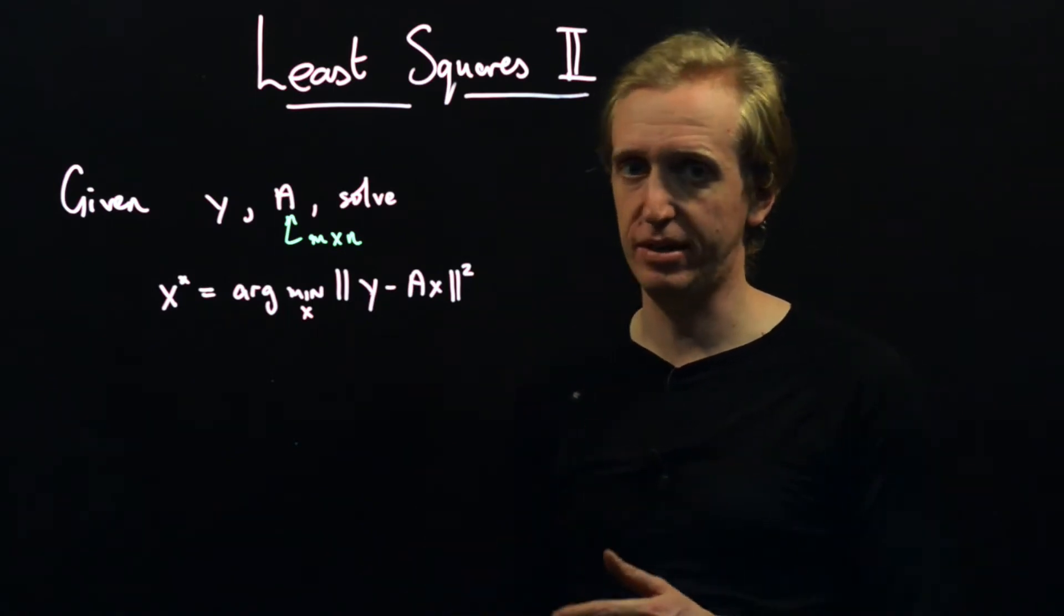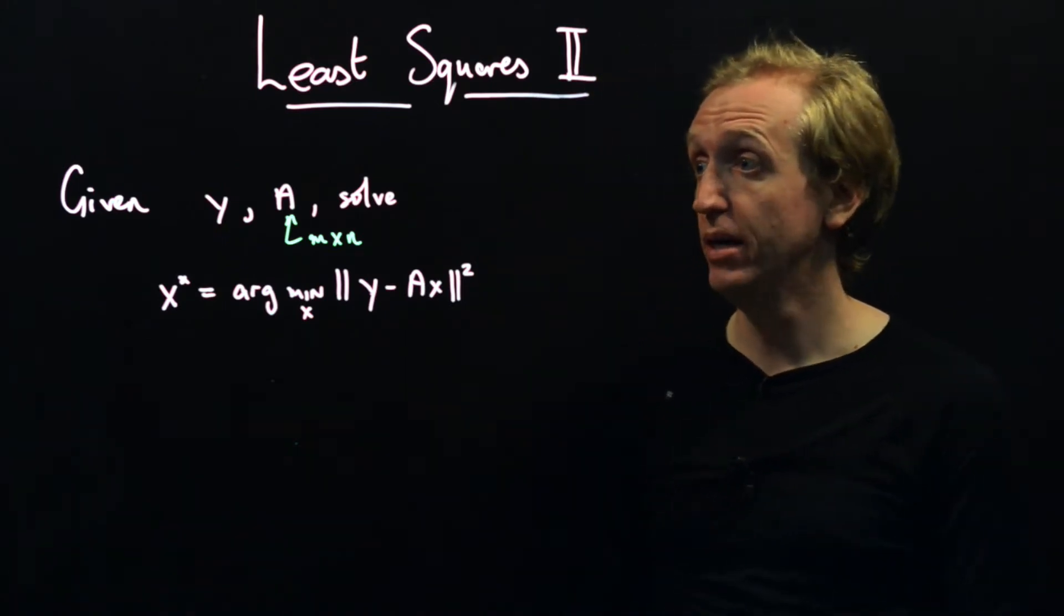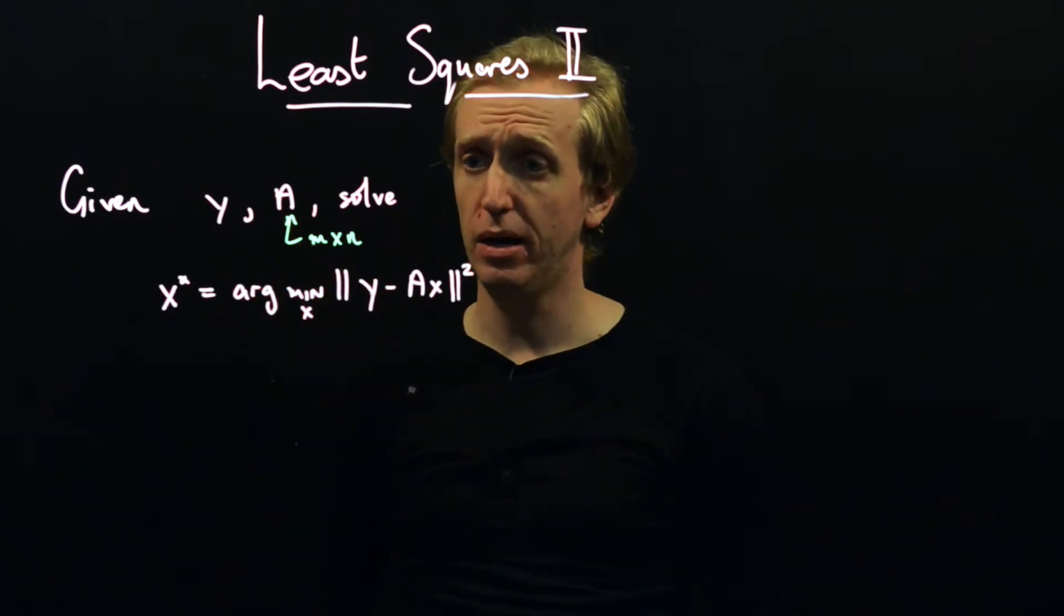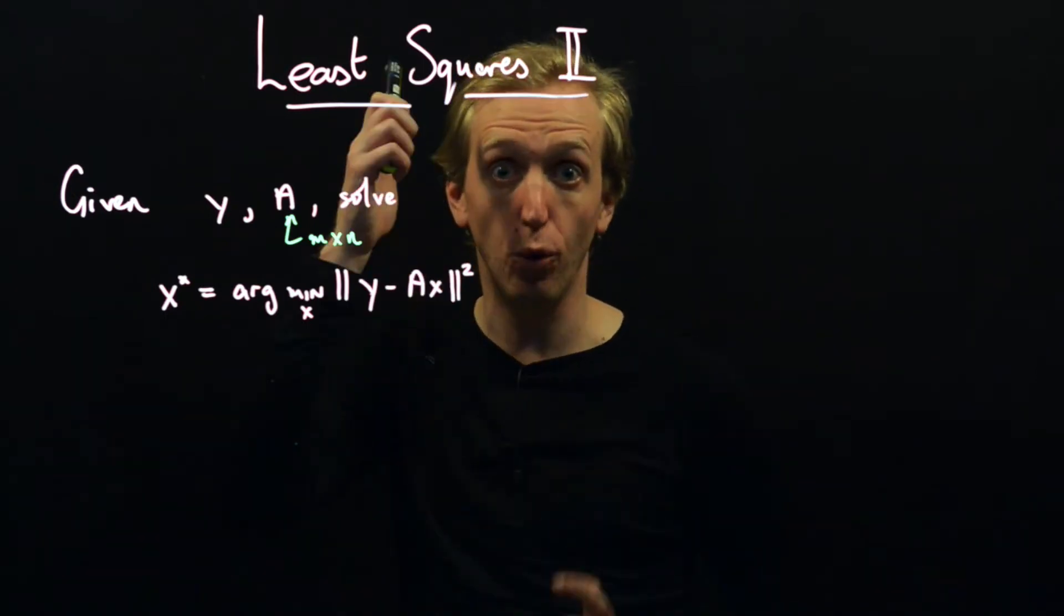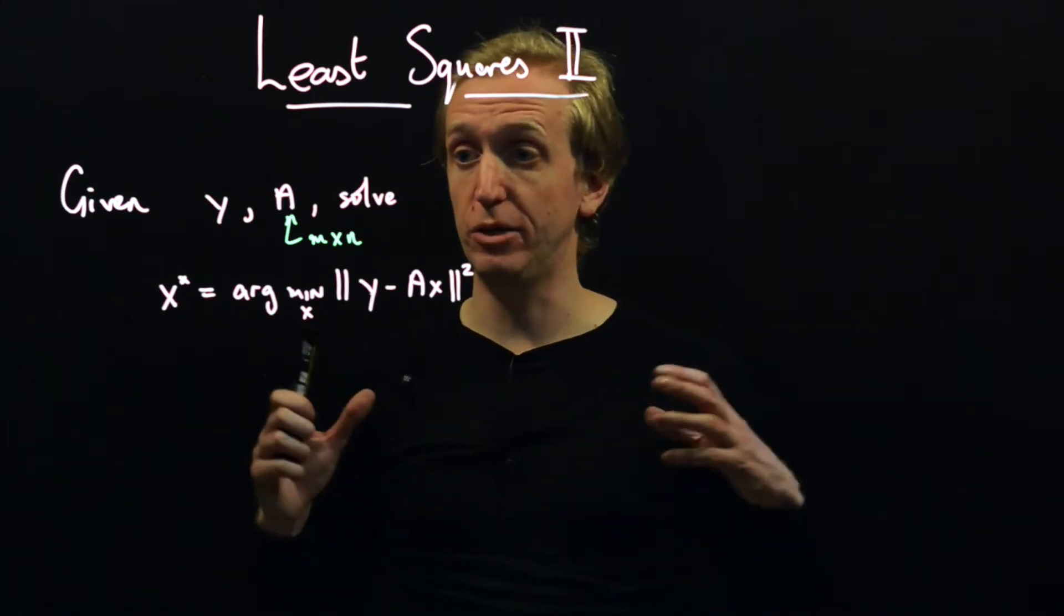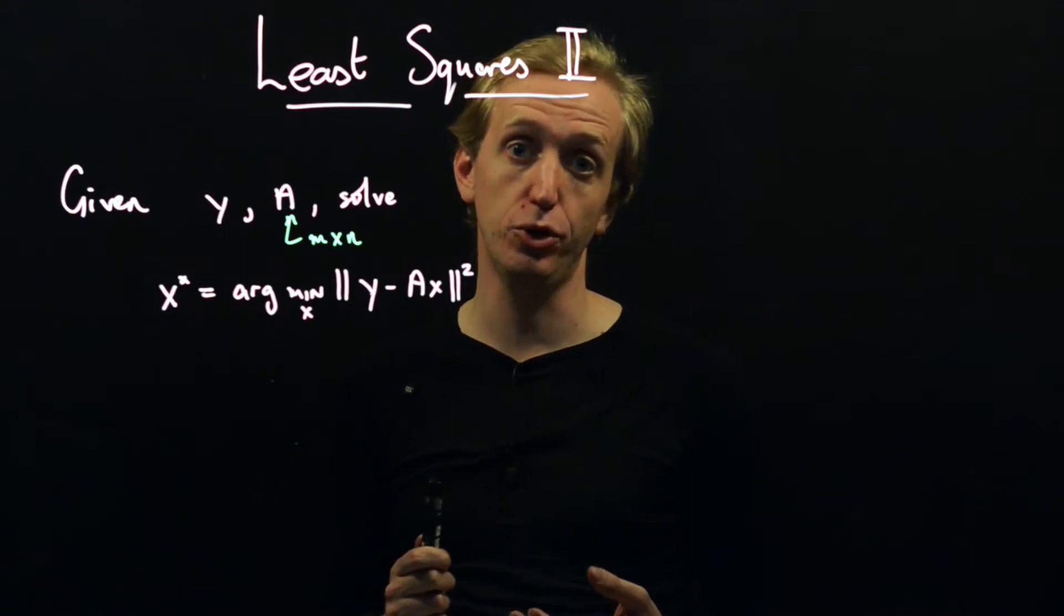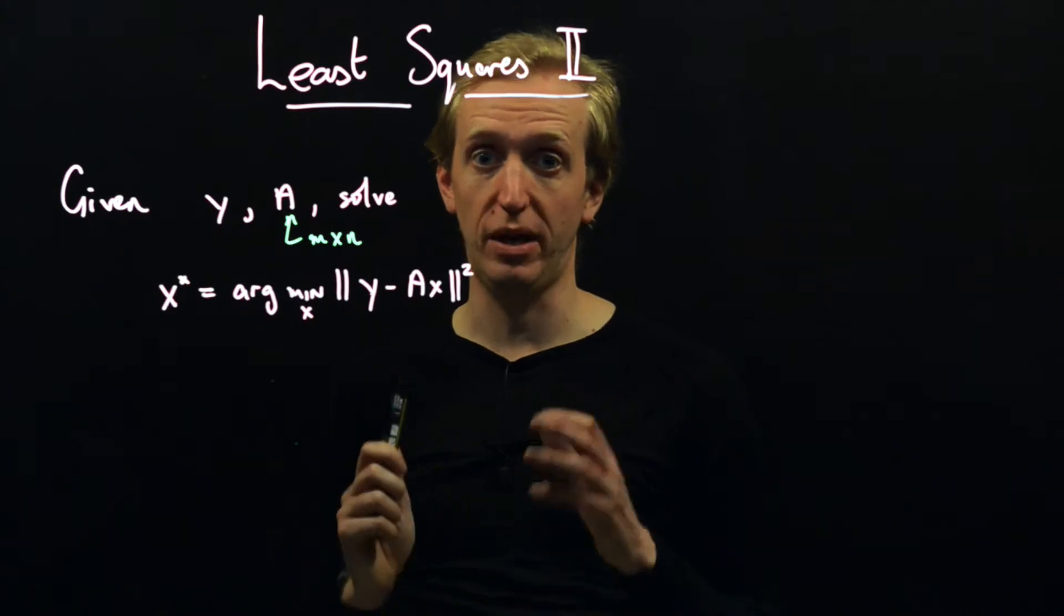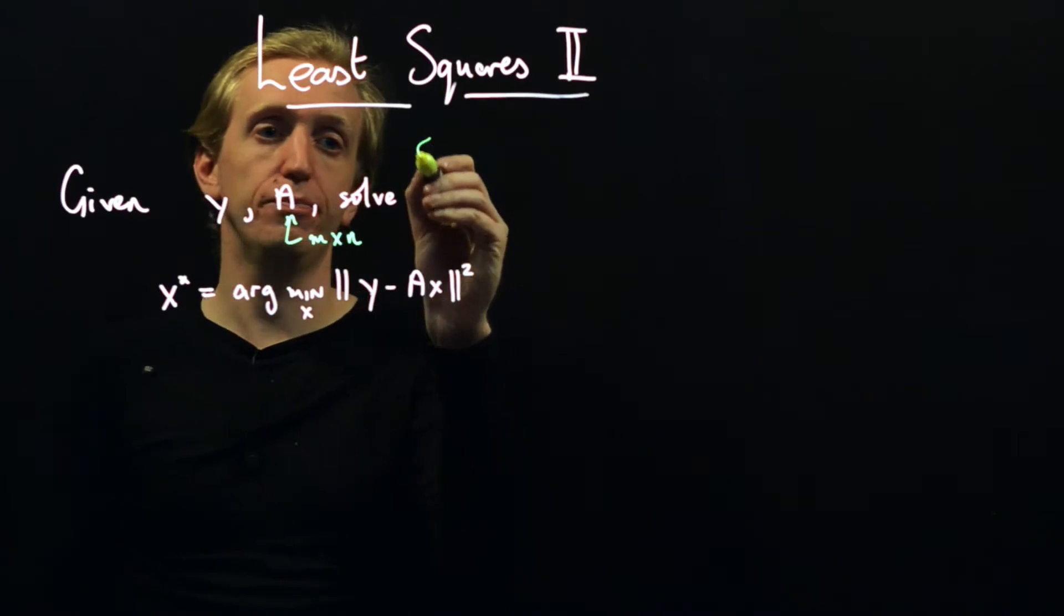And this is sort of covering the scenario that was missed by the previous least squares problem. So once again, we're given a vector y and an n by n matrix A. But this time, we're considering the case when the matrix A is very tall and very thin. So in our first class of problem, the matrix A was short and fat, meaning we had lots of solutions to the equation y equals Ax. This time, it's very tall and thin and we will probably have no solutions to the equation y equals Ax.